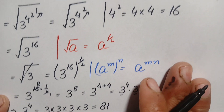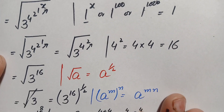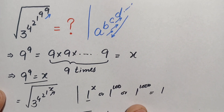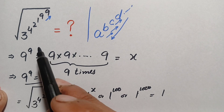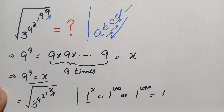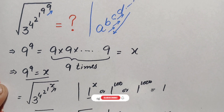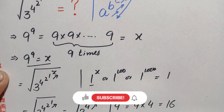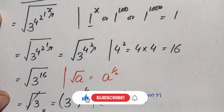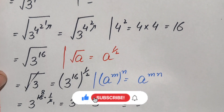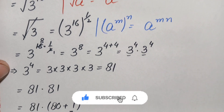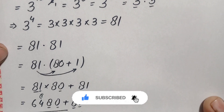So 6561 is the answer and the value of this interesting radical math problem. If you liked this video, don't forget to subscribe to my YouTube channel for more interesting step-by-step math videos. Thanks for watching.